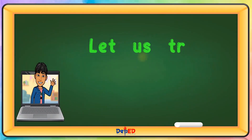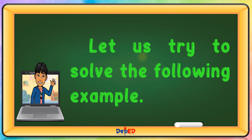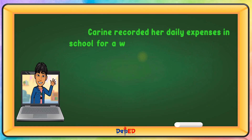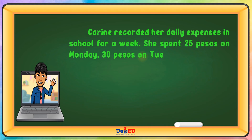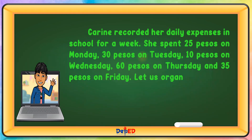Let us try to solve the following example. Karine recorded her daily expenses in school for a week. She spent 25 pesos on Monday, 30 pesos on Tuesday, 10 pesos on Wednesday, 6 pesos on Thursday, and 35 pesos on Friday.